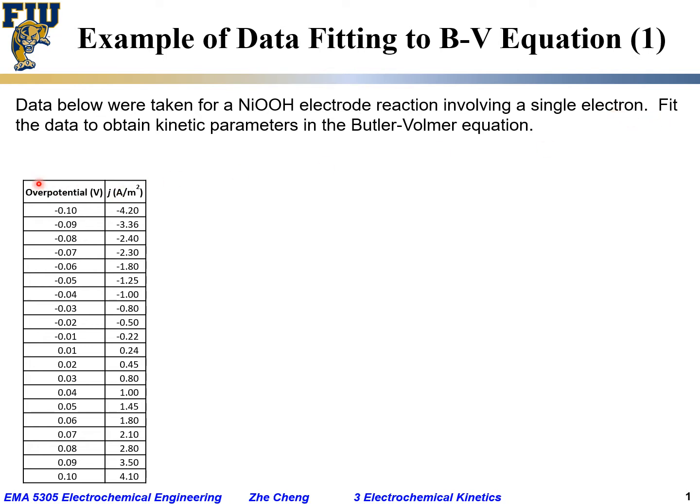We have overpotential J for current density, overpotential in the unit of volt. Negative means cathodic bias, positive means anodic bias. With cathodic bias we have negative current density meaning cathodic or reduction current, while with positive overpotential we have positive current meaning oxidation or anodic current.